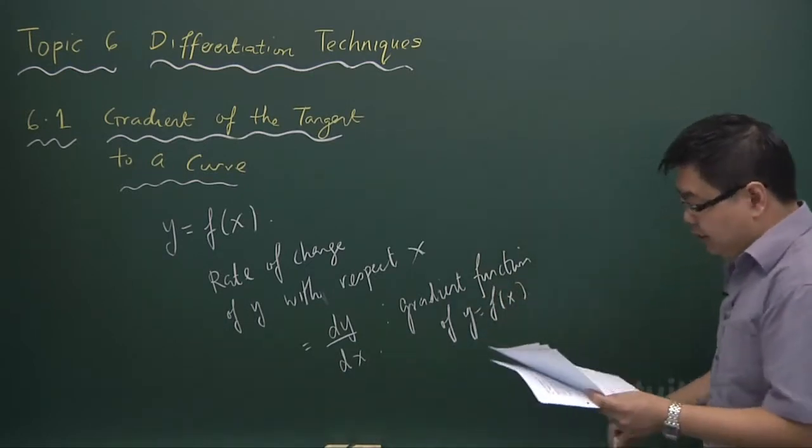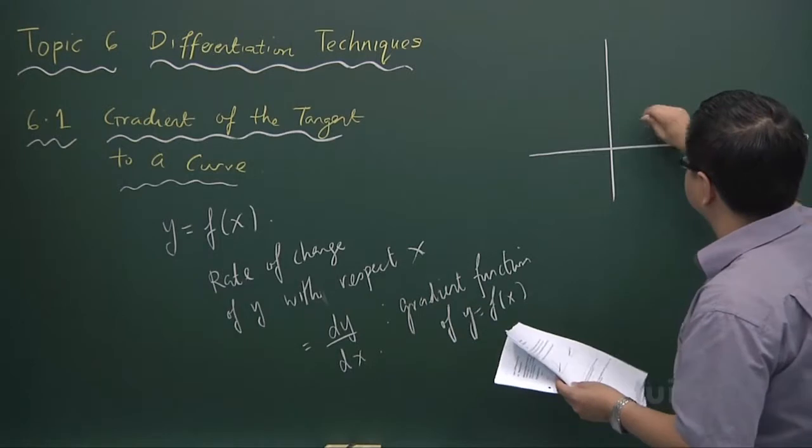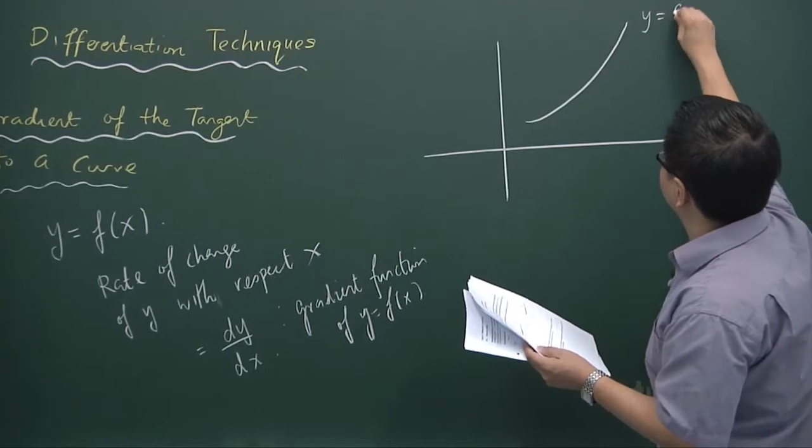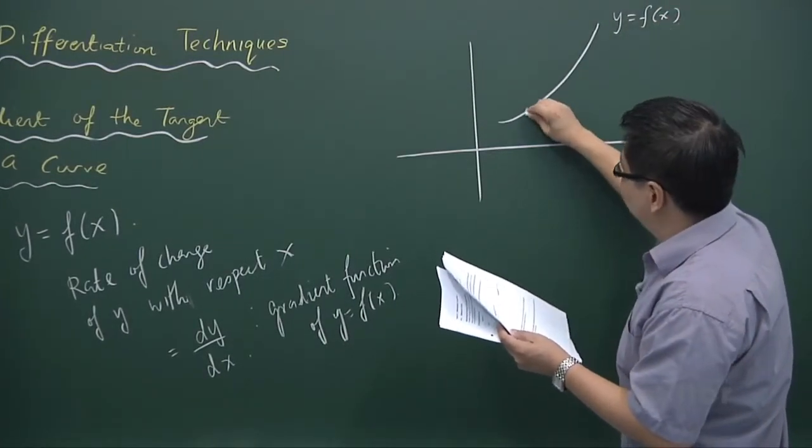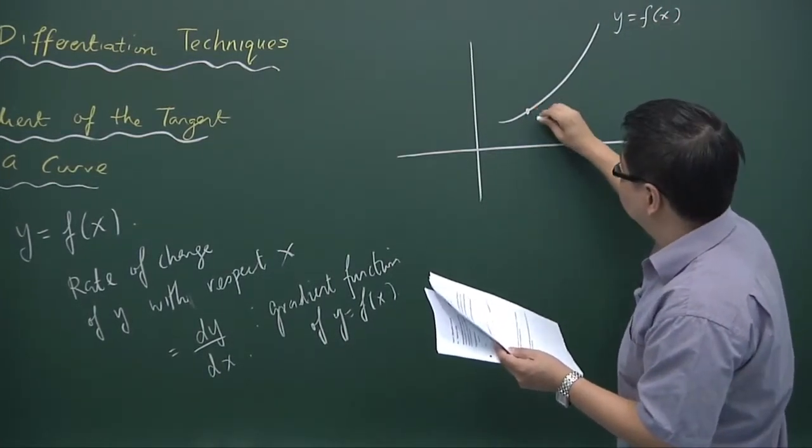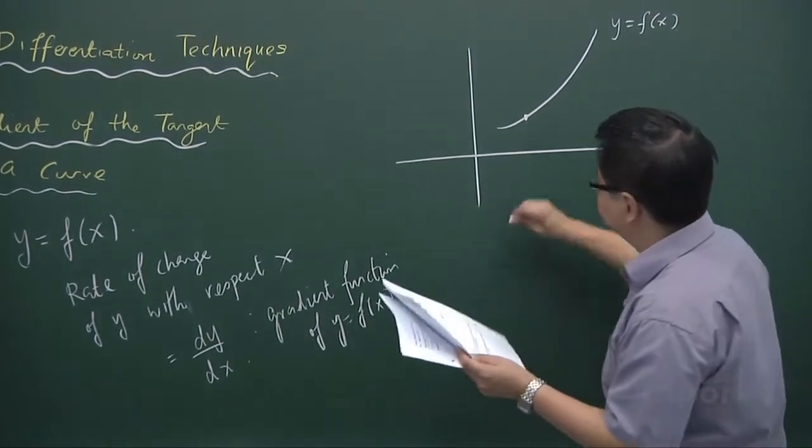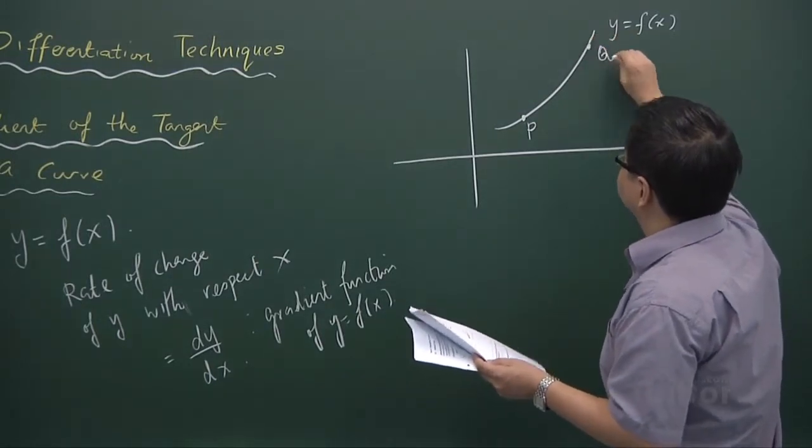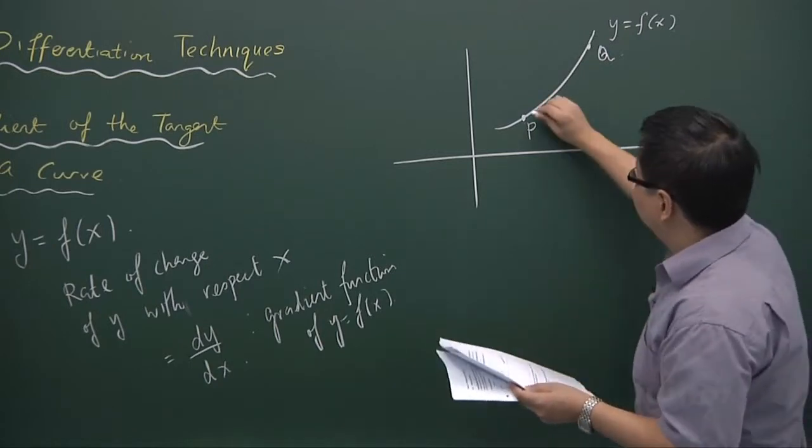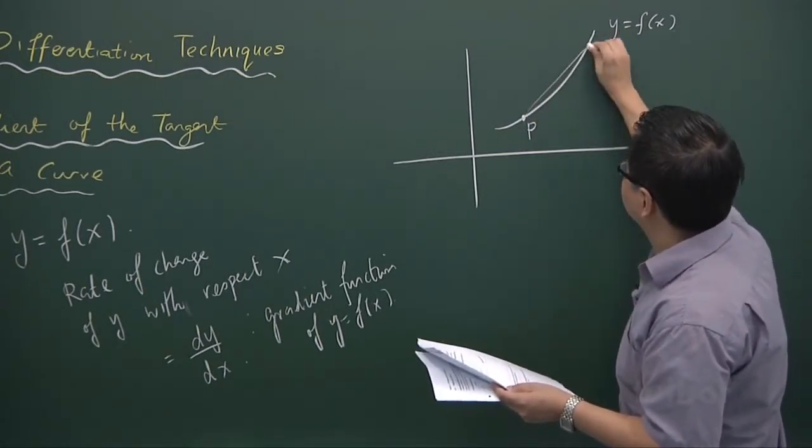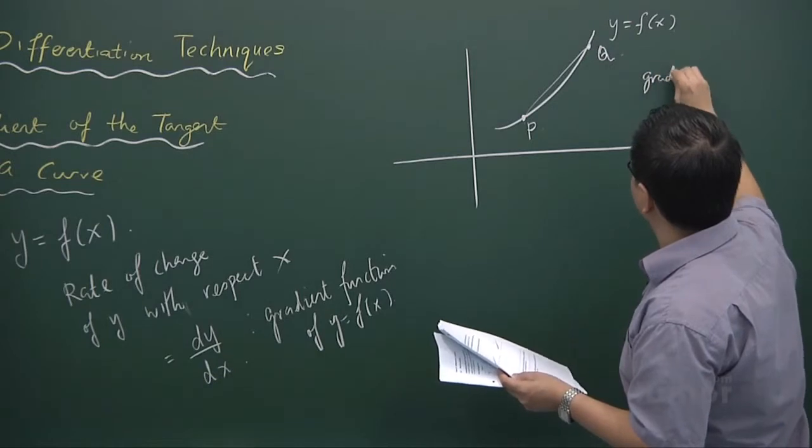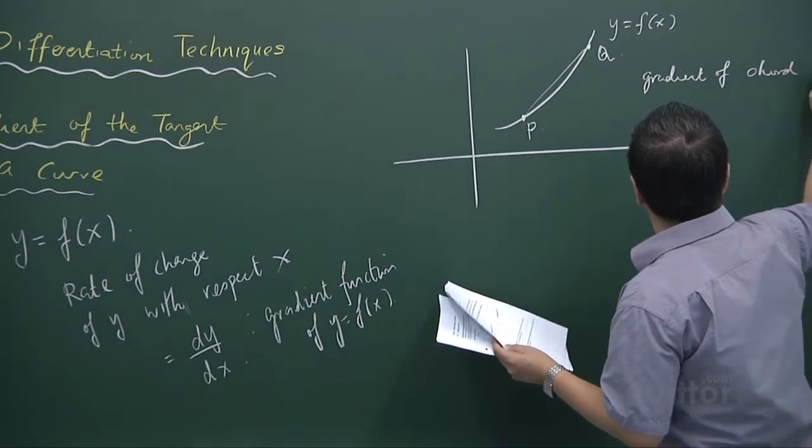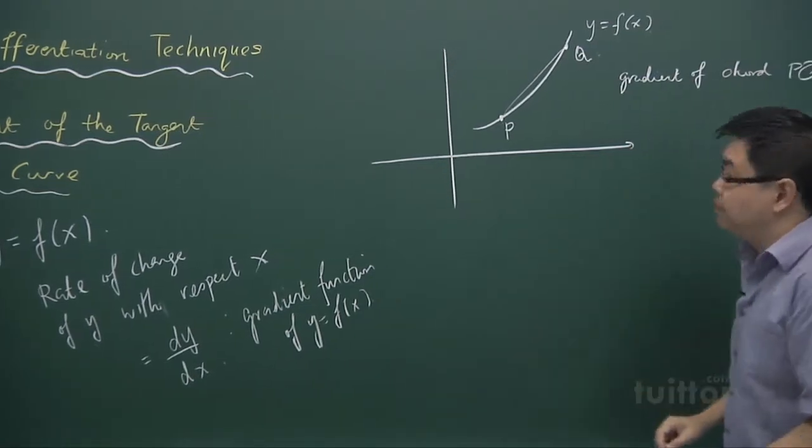So that means that if you have a curve, this curve, which is y equals fx, and suppose we want to find what is the gradient at this point. This point is p. And suppose we have another point q here that is on the curve. And if we are interested in finding, first, the gradient of the chord pq.